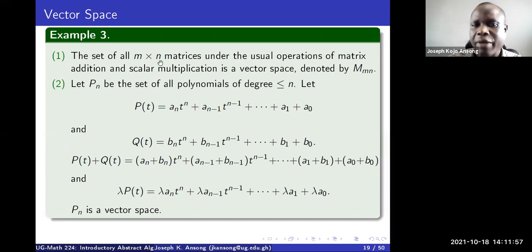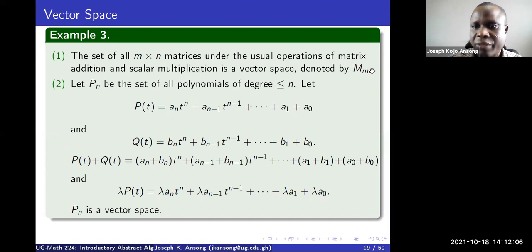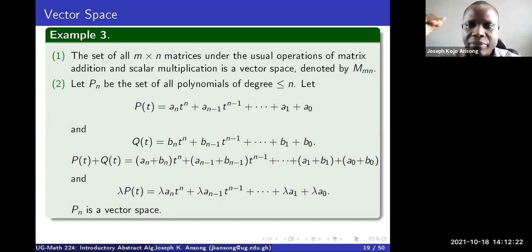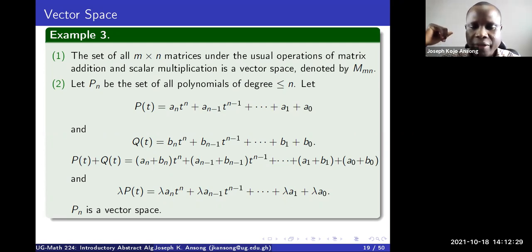Another example is the set of n by n matrices, under the usual operations of matrix addition and scalar multiplication. The set of matrices, denoted here, is a vector space. If you want to convince yourself, you could pick a 2×2 or 3×3 matrix and go through the axioms as we did in the previous example.